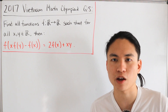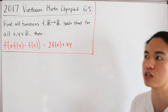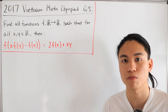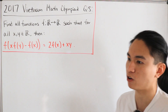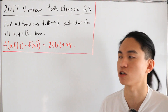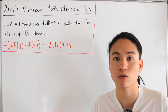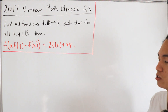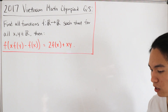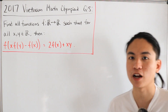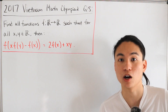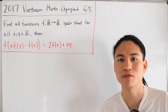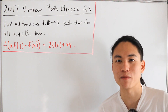We'll plug in different variables to make observations and eventually find the unknown function. It's also good to check whether the function we find actually satisfies the equation. This is a really cool exercise from this Olympiad.